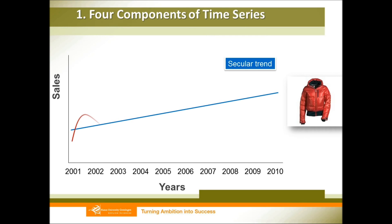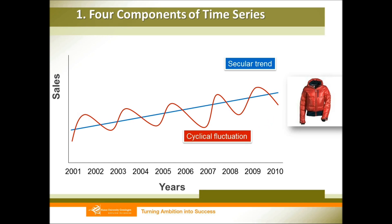We know that our economy also experiences a cyclical trend. We call this cyclical variation. For example, sometimes the economy has got prosperity, and sometimes it has got recession or depression.